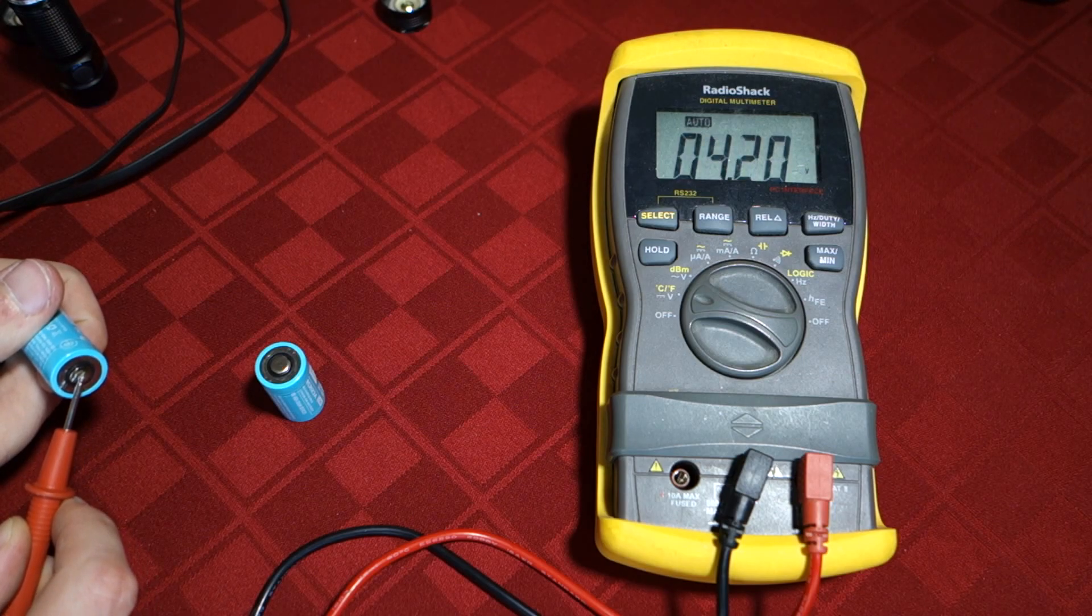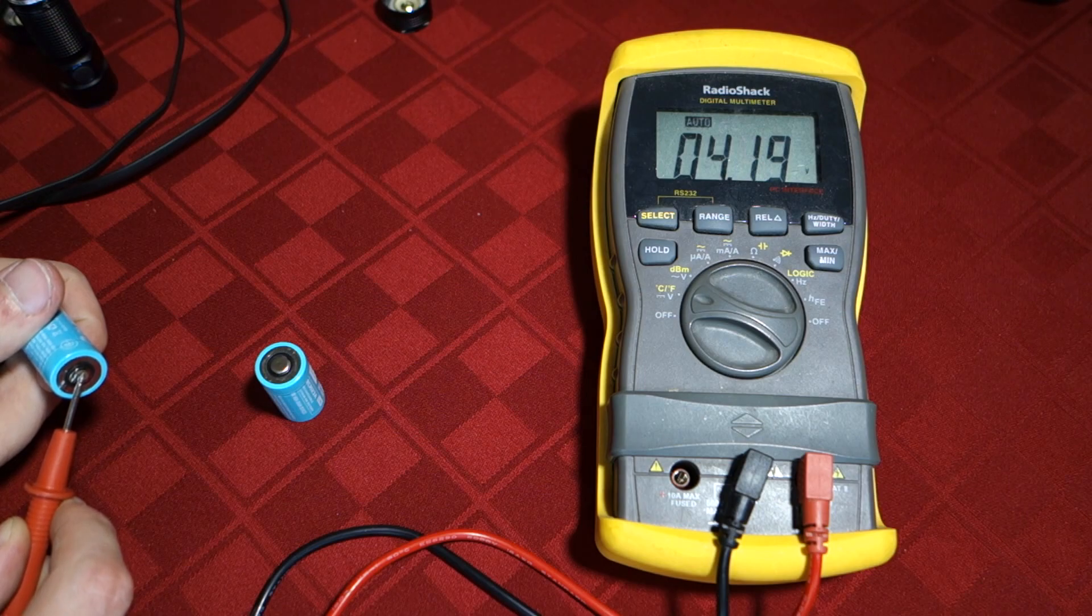So we can see here, this battery is 4.2 volts, exactly 4.19, 4.2. So that's perfect.